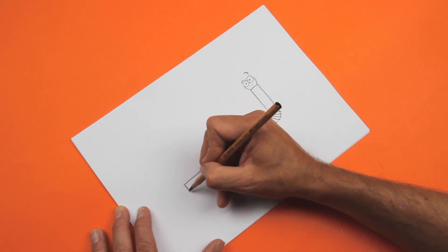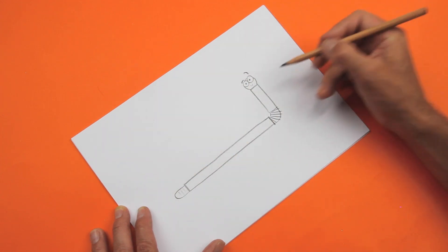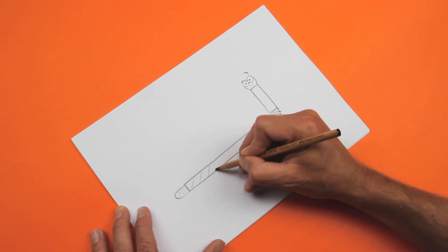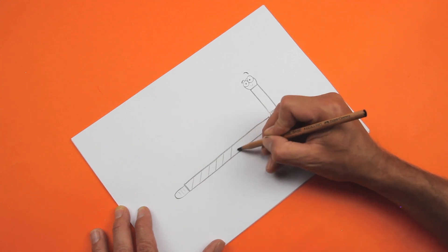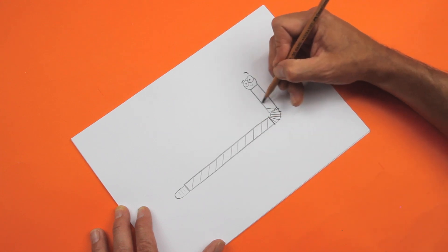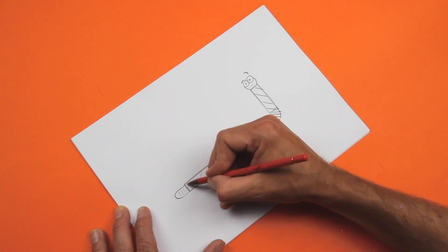And at the other end, at the end of the worm, add a few little lines. Then we can add the stripes, or you can decorate your straw in any way you want. I'll just do some diagonal lines and we can color that in as well.